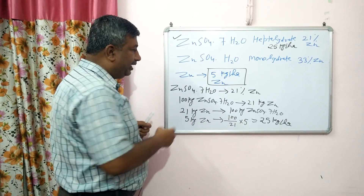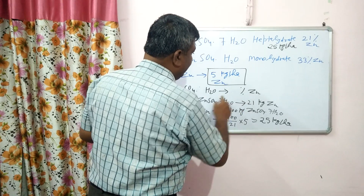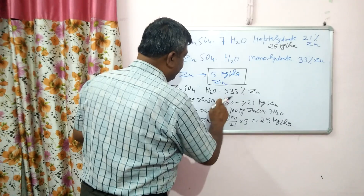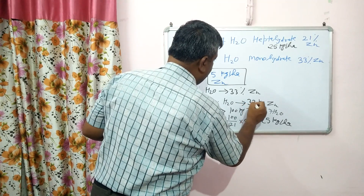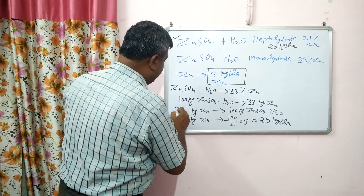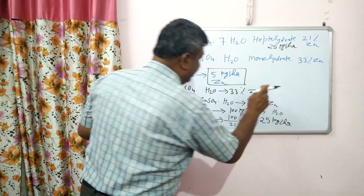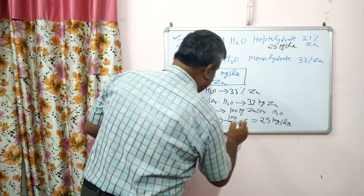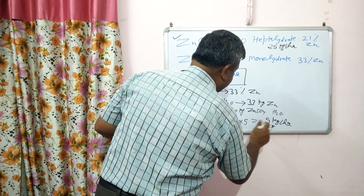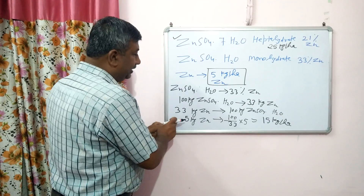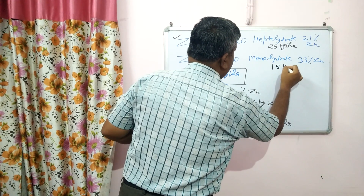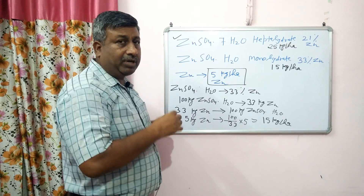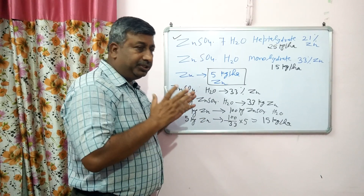If the available form is monohydrate, then monohydrate has 33% zinc. That means 100 kg monohydrate contains 33 kg zinc. So 5 kg zinc will be obtained from (100 ÷ 33) × 5, which is approximately 15 kg per hectare. So the monohydrate requirement is approximately 15 kg per hectare. The soil application rate is different for different types of zinc sulphate.